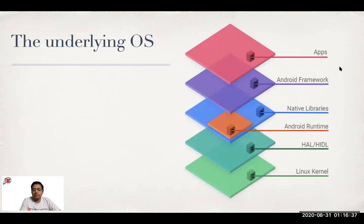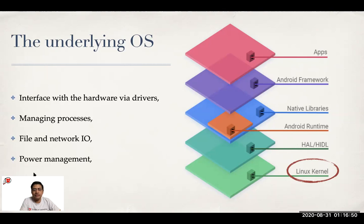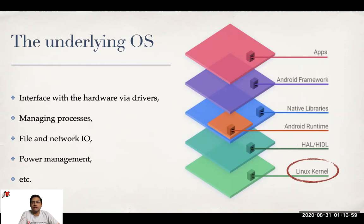The first and bottom-most layer we are going to talk about is the Linux kernel. Android uses a version of Linux, and this particular layer supports what a typical operating system should. It allows users working through any of the higher layers to interface with the hardware, manage the processes, deal with files — creation, deletion, writing, reading — and similarly with network: connecting to network, releasing a network socket, and passing data on the network. Power management, which is crucial with mobile devices more than desktop or web apps, is also managed at this lower level by the Linux kernel.